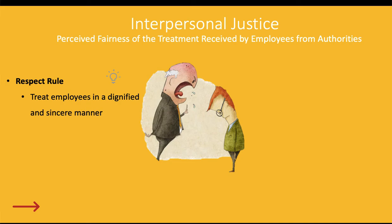By correcting someone's behavior and treating them in a dignified way, we demonstrate respect and they will perceive fair interpersonal treatment. For example, when addressing students who have plagiarized or cheated on assignments, even when failing them on an assignment or in the class, rather than shouting at them or calling them a failure, the approach is to explain why the behavior is not appropriate and how it hurts them but also the class and the institution's values. A student might not like the outcome but can perceive they've been treated fairly interpersonally.